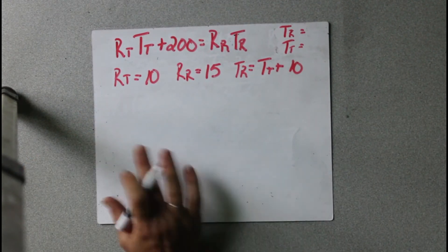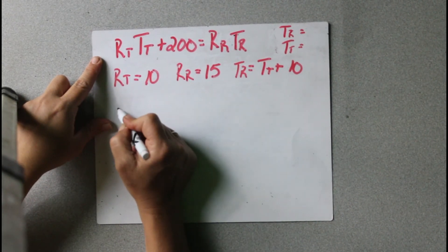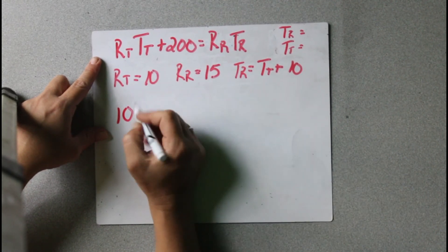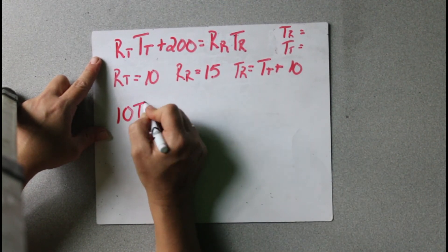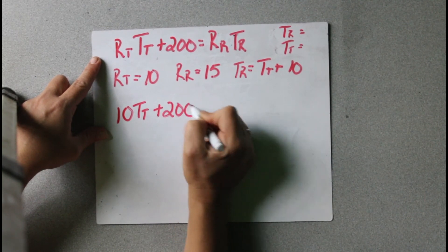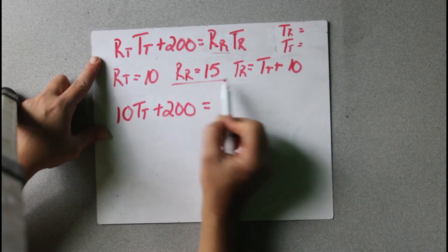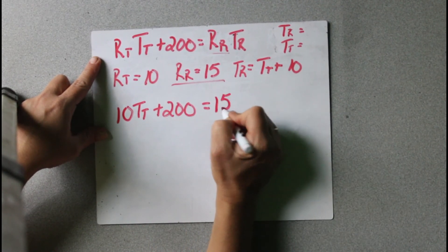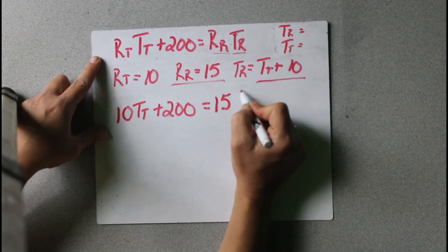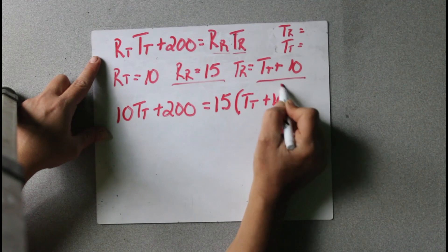So we're going to substitute our values. RT equals 10. TT we don't know, so we leave it. RT — that's 10 — times TT, plus 200, equals RR, which is 15, times TR. TR is right here, so we substitute that whole value: TT plus 10.